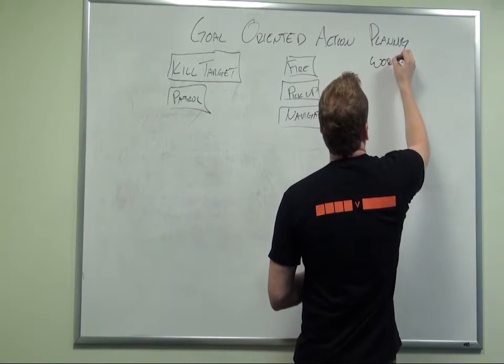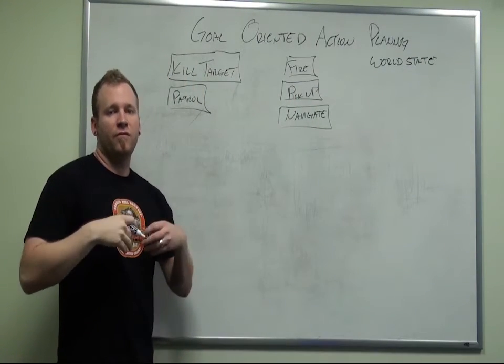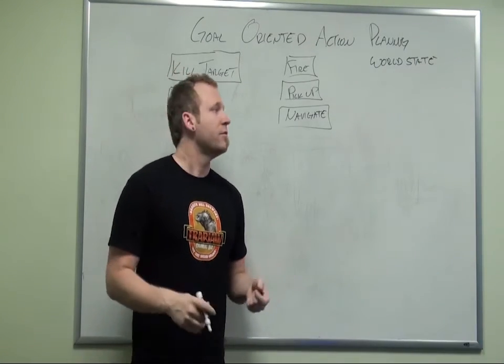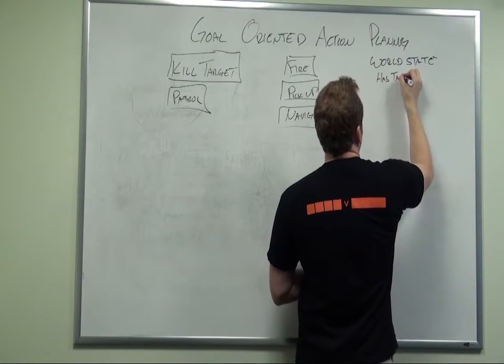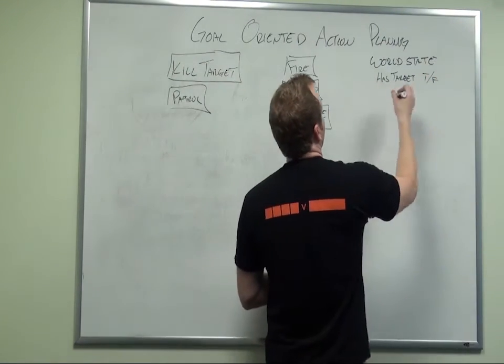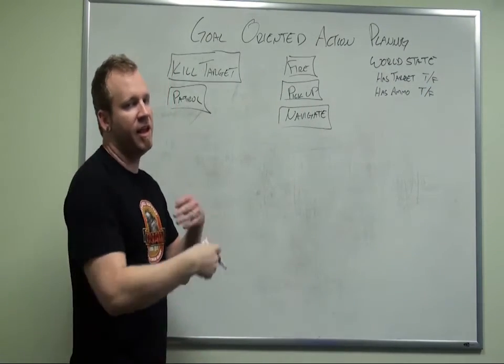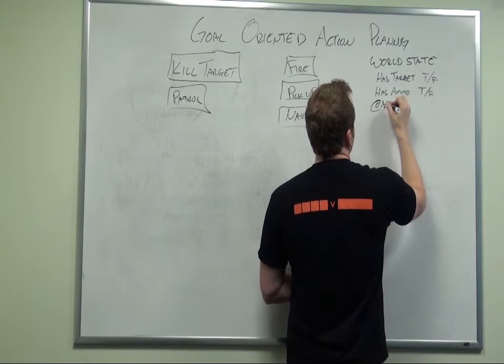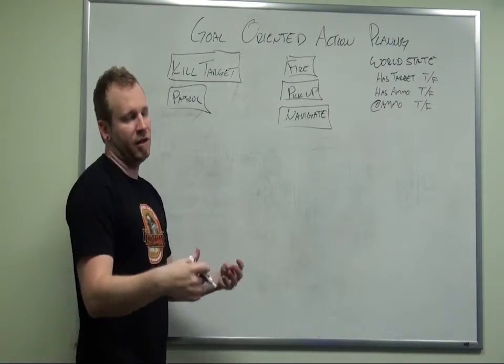The last important part of GOAP is something called the world state. A world state is not like a state in a finite state machine. A world state in GOAP is a collection of properties. These properties describe the character's view of the world. In the case of our little shooty guy, he's going to have a world state: has target, which will be true or false. Another world state will be has ammo, also true or false. It doesn't have to be true or false, it could be an amount or anything like that. Our last world state will be is he at an ammo box, also true or false. In our game, we're going to have an ammo box where the guy can go and reload infinitely to shoot his weapon.